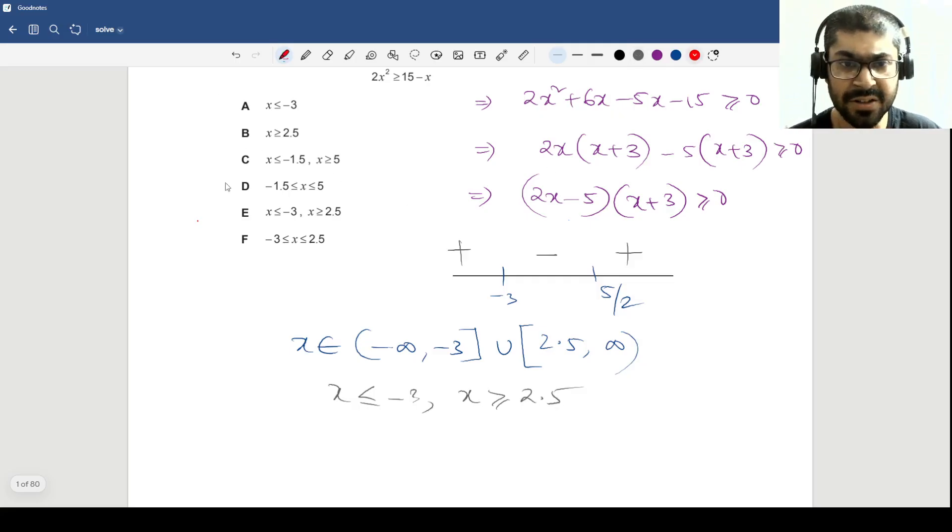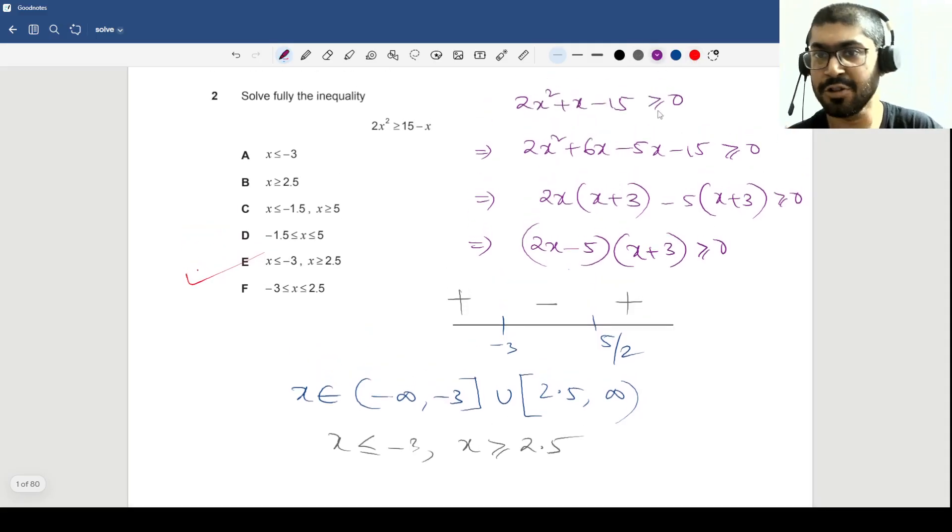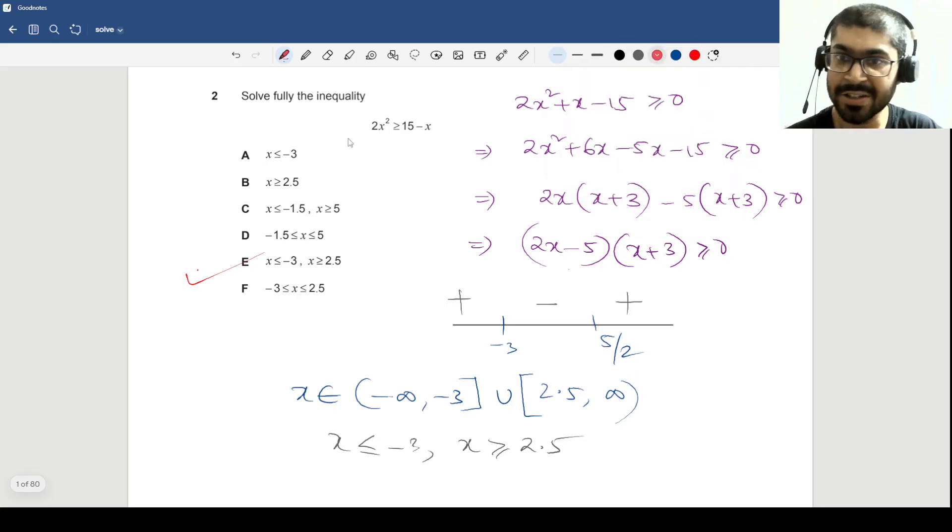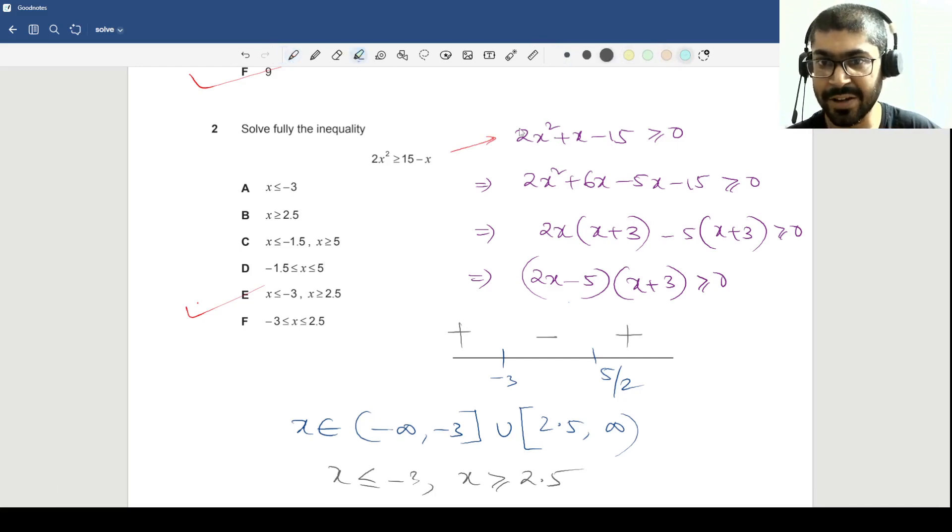But this is the set format. They want us to give the answer in the interval format. So this will be x less than equals to -3 and x greater than equals to 2.5. So I think that matches option E. So this is the traditional way in which we solve inequalities. But how do you solve it without it? Do we do this large unwieldy calculation during the exam? No, of course not. We will just check a few values. So the first value that you should check. In the first line you do this transformation because that will make things a lot easier. Do this transformation first.